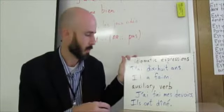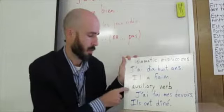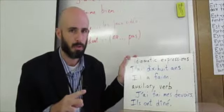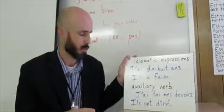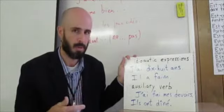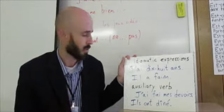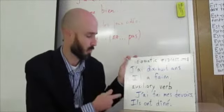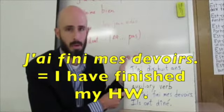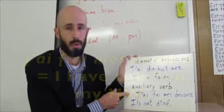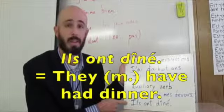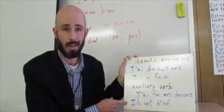And the other important thing, probably even more important, is the fact that we use avoir as one of our two helping verbs in French. So you're going to be learning soon the passé composé, the most frequently used past tense in French. So here are two examples. You could say j'ai fini mes devoirs. Or, ils ont dîné. Just a couple of examples.